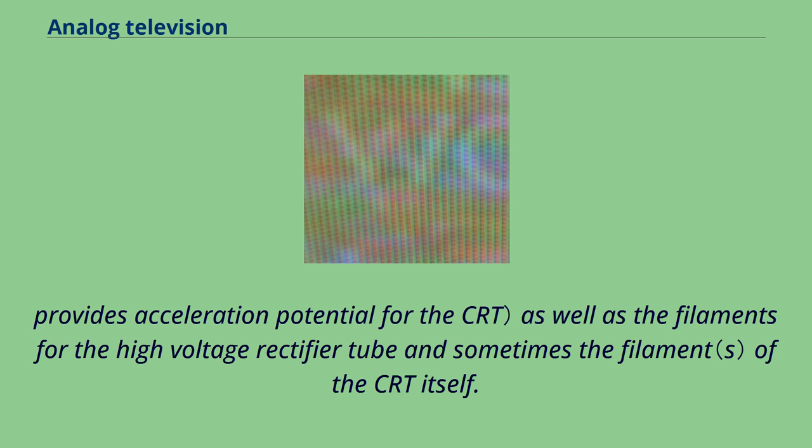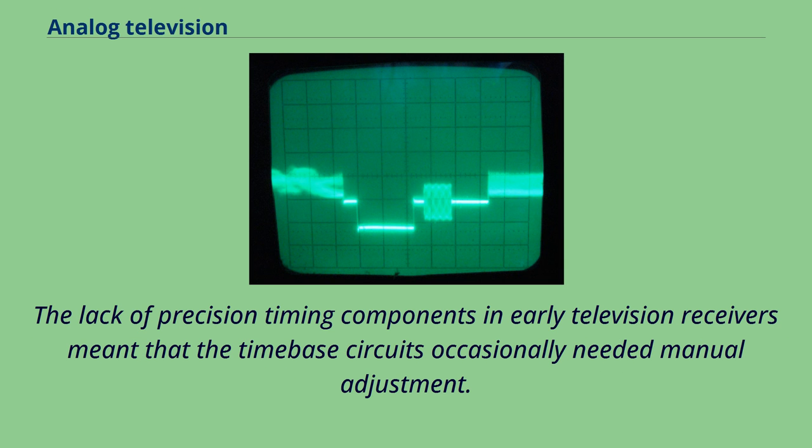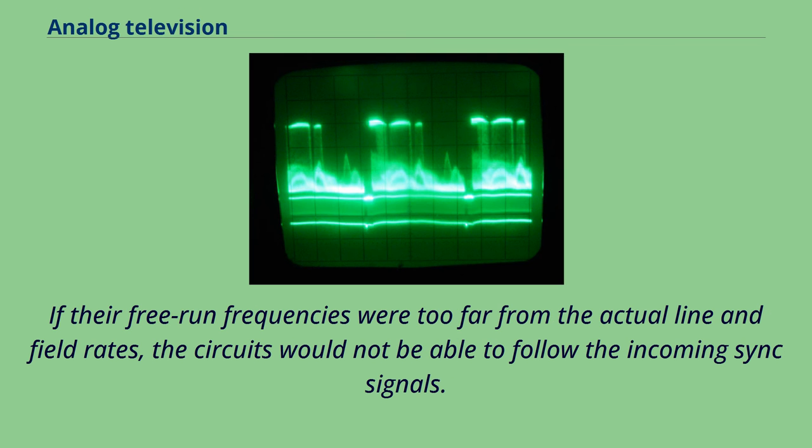The lack of precision timing components in early television receivers meant that the time-based circuits occasionally needed manual adjustment. If their free-run frequencies were too far from the actual line and field rates, the circuits would not be able to follow the incoming sync signals. The adjustment took the form of horizontal hold and vertical hold controls, usually on the front panel along with other common controls. These adjusted the free-run frequencies of the corresponding time-based oscillators.